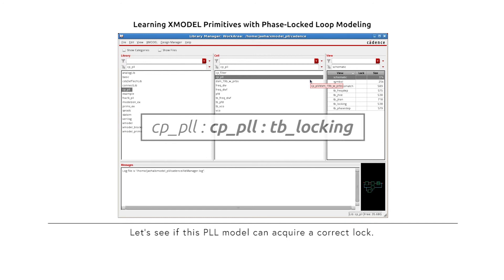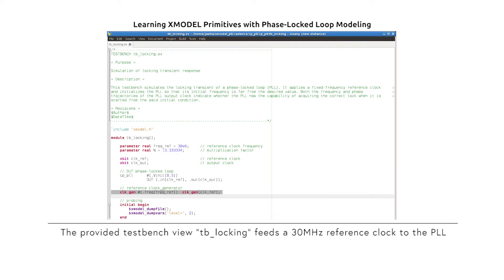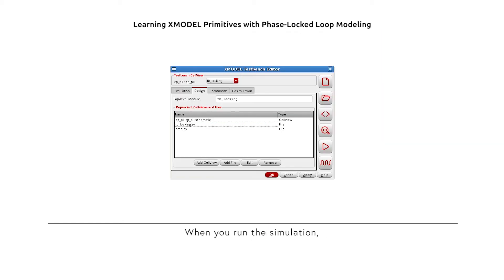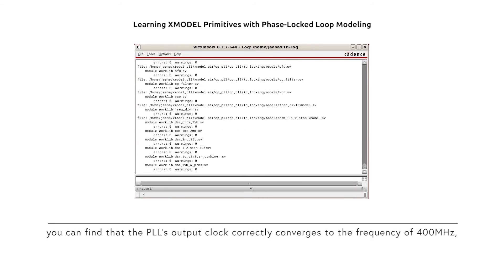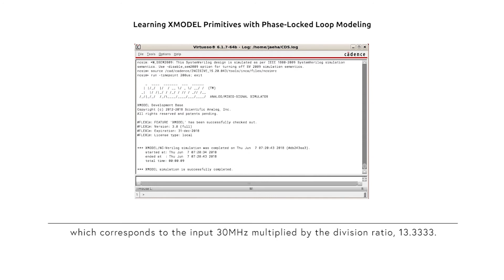Now let's see if this PLL model can acquire a correct lock. The provided test bench view, TB_locking, feeds a 30 MHz reference clock to the PLL, and the PLL is initialized at a frequency far away from the desired locking point. When you run the simulation, you can find that the PLL's output clock correctly converges to the frequency of 400 MHz, which corresponds to the input 300 MHz multiplied by the division ratio 13.333.